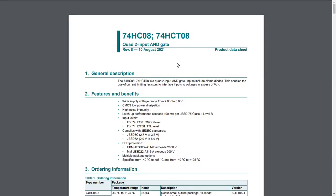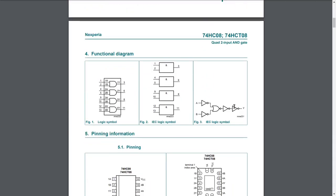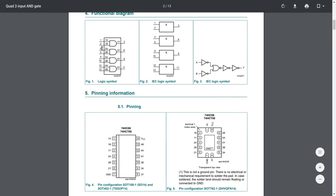To demonstrate this on a real circuit, I'm using a chip called the 74HC08, known as the quad two-input AND gate. This chip contains up to four AND gates, each with two inputs and one output. Looking at the datasheet's functional diagram, we can see input A, input B, and the result — up to four logical AND gates in a single chip.